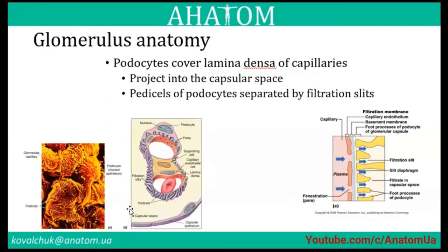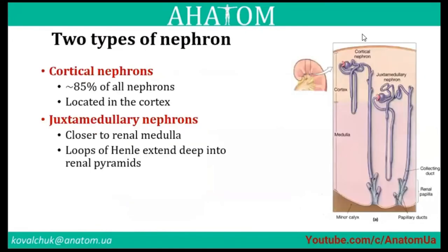Glomerulus anatomy: podocytes with interdigitating processes surround the capillaries and project into the capsular space. There are two types of nephrons: cortical nephrons, located in the cortex — about 85% of all nephrons — located closer to the renal medulla, and juxtamedullary nephrons whose loops of Henle extend deep into the renal pyramids.